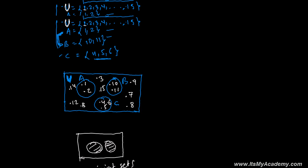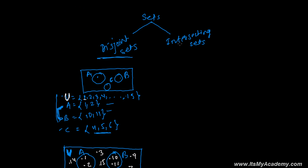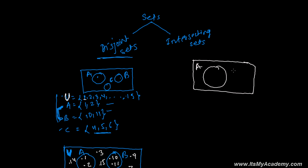Now let's talk about what intersecting sets are. From the name itself you get the idea — something is getting intersected, something is common between the sets. We have a Venn diagram where there is always something common. Suppose we have set A and set B. Between these two sets, some elements of A are also members of B — there are common members found in A and also in B. Such a type of set is called an intersecting set.